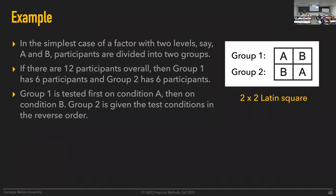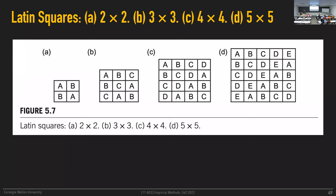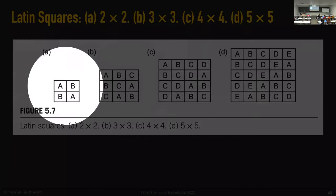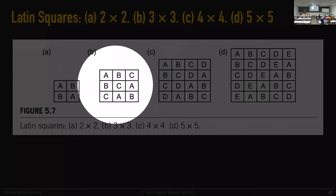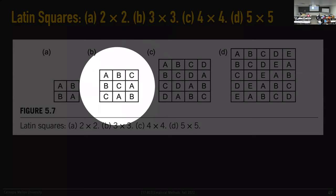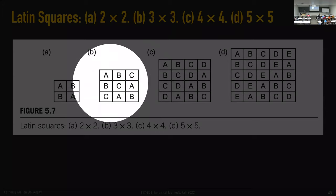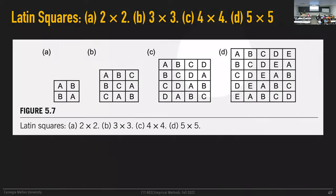This design is called a Latin square, named after Euler, the Swiss mathematician. Latin squares exist of any size. The two-by-two case has two groups and two conditions with reversed order. For three conditions A, B, C, you have three groups: A-B-C, B-C-A, and C-A-B. Note how every condition appears exactly once in every row and exactly once in every column. You can construct Latin squares for arbitrary sizes with more conditions. The idea is to try to cancel out order effects by subdividing participants into groups and exposing them to conditions in opposing orders.